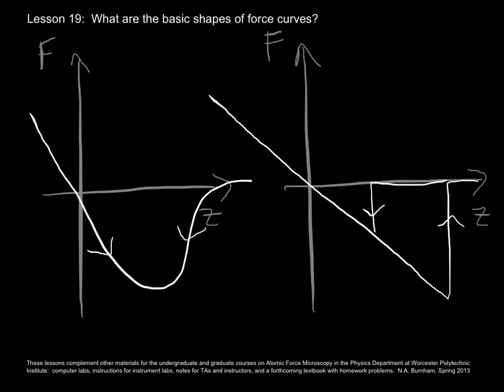In summary, there are two basic shapes of force curves. The one on the left is for when the cantilever is stiff or the normal spring constant is high. The one on the right is for when the spring constant is low. So I've drawn these for the same tip-sample interaction, having only changed the cantilever. So you can see those shapes are completely different for the same tip-sample interaction. In the next lesson, we'll talk about how to process these data so you can get as much information out of them as possible.